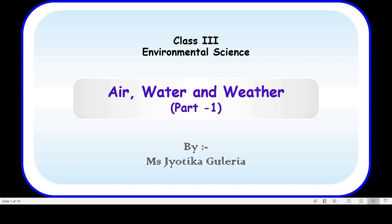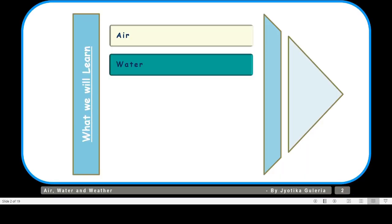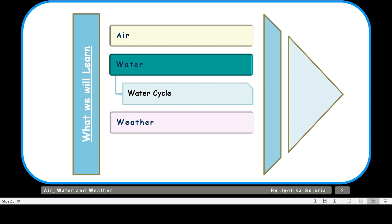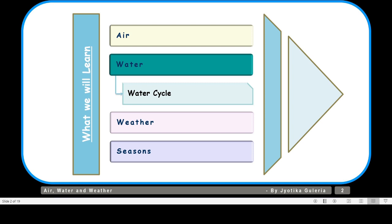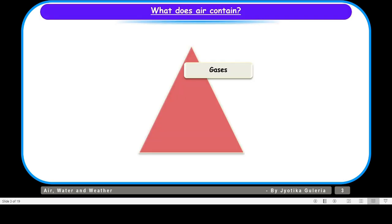This topic is divided into different parts: air, water — wherein we will talk about water cycle — and weather and seasons. In this video session, we will talk about air, water and water cycle. So first of all, let us take up air. What does air contain, or what is air made up of, or what are the constituents of air?